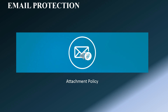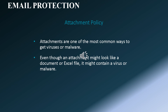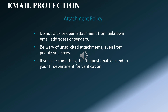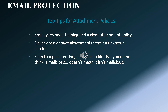Attachment policy: attachments are one of the most common ways to get viruses or malware. Even though an attachment might look like a document or Excel file, it might contain a virus or malware. Do not click or open attachments from unknown email addresses or senders. Be wary of unsolicited attachments, even from people you know. If you see something questionable, send it to your IT department for verification. Top tips for preventive measures: utilize an AV product on all devices, not just Windows computers. Know your attachment policy coupled with a spam filter. Implement a web content filter. Utilize unique passwords and maintain a clear password policy — if needed, use a password manager. Keep all internet-connected devices up to date, including routers, IoT devices, computers, and mobile devices.